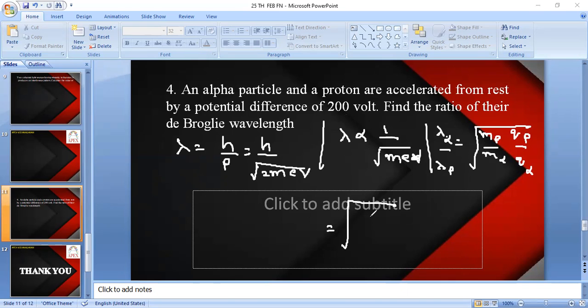For proton, the mass is m only. For alpha particle, there are two protons and two neutrons. Almost they will have equal masses. So the mass of alpha particle can be nearly equal to 4 into mass of proton.